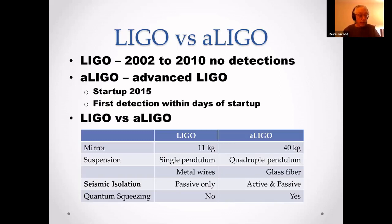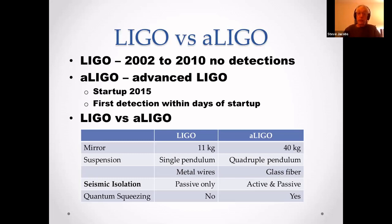Some differences between LIGO and advanced LIGO: the mirror is 40 kilograms versus 11 — about 88 pounds. The suspension is a single pendulum versus a quadruple pendulum. The suspension was metal wires, now it's glass fibers — which sounds precarious.